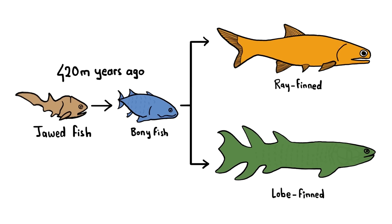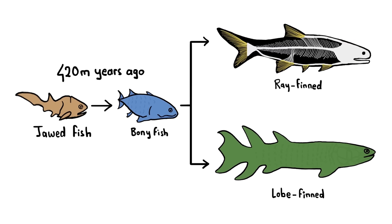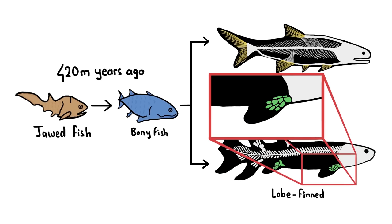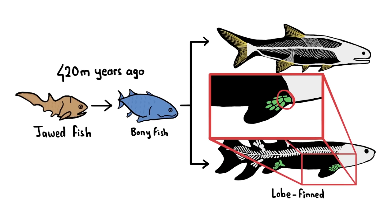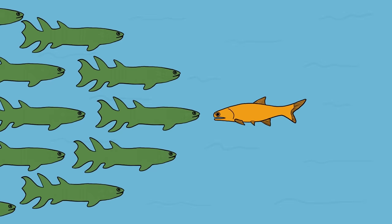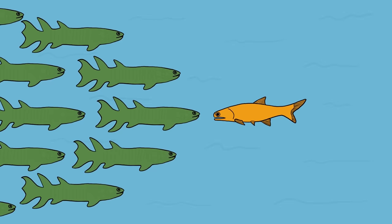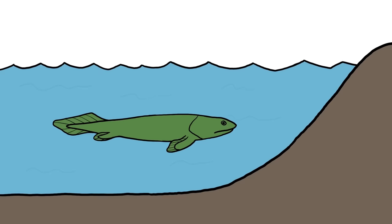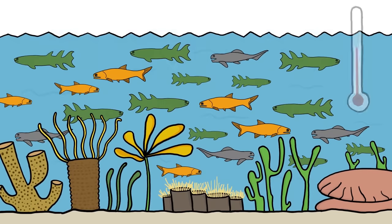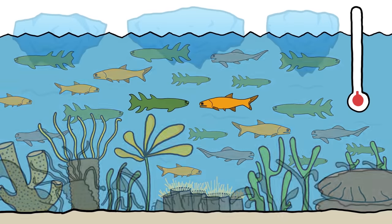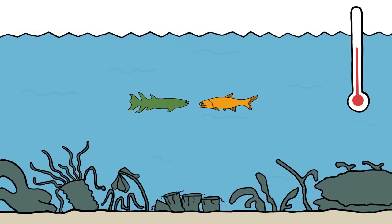Very soon after bony fishes first evolved, they branched into two groups, those with flimsy ray-type fins and those with more meaty appendages that were attached to their bodies by a single strong bone. At first, those so-called lobe-finned fishes far outnumbered their ray-finned relatives. But just as some of them were becoming adapted for life in the weedy shallows, global climate fluctuations caused a mass extinction that devastated life in the oceans.